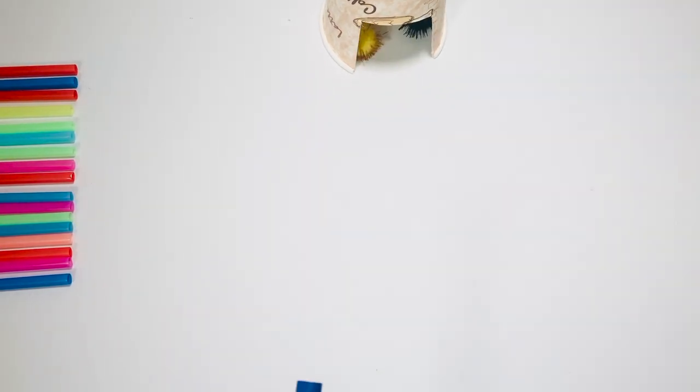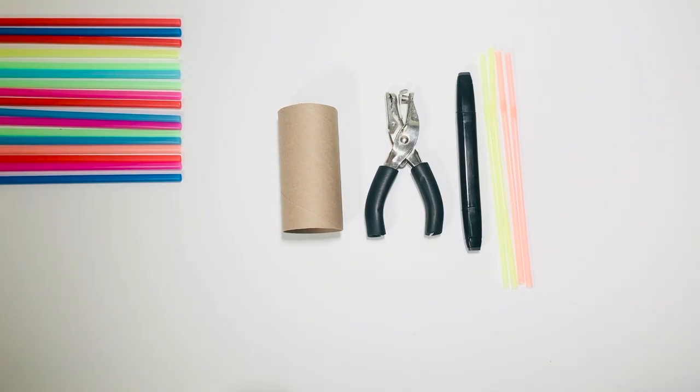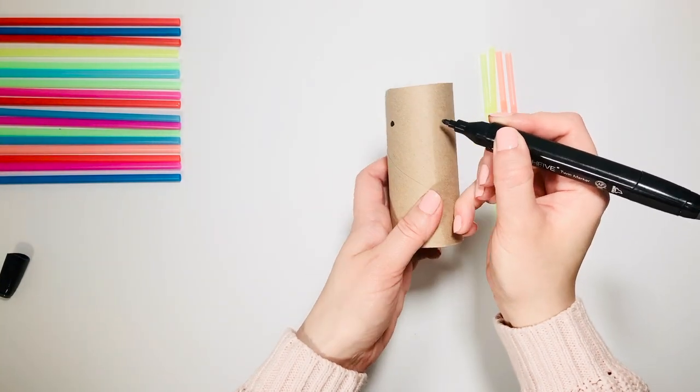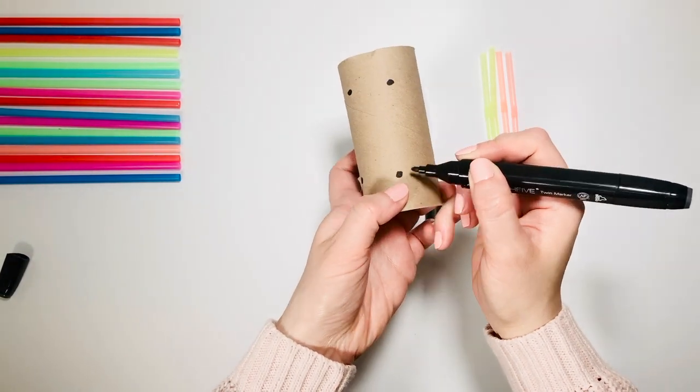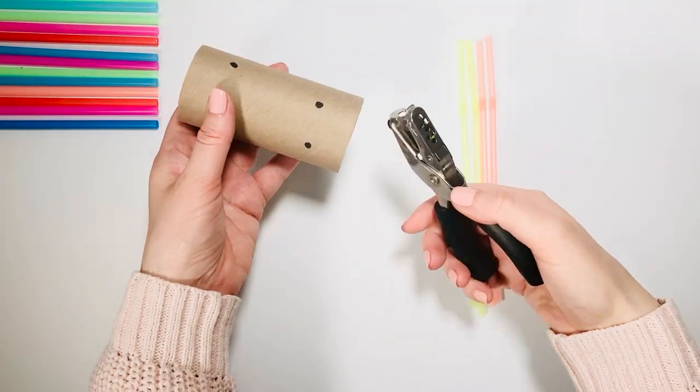For game number three you need a paper roll, hole puncher, marker, and some straws. Make five dots at the top and five dots at the bottom. Use the hole puncher to make the holes.